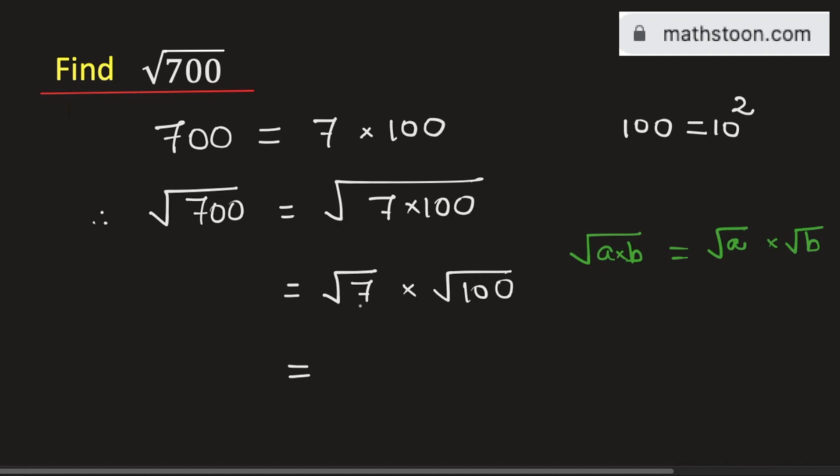As √7 cannot be simplified further, so we will write √7 as it is. And √100 is equal to 10, so we will write it.